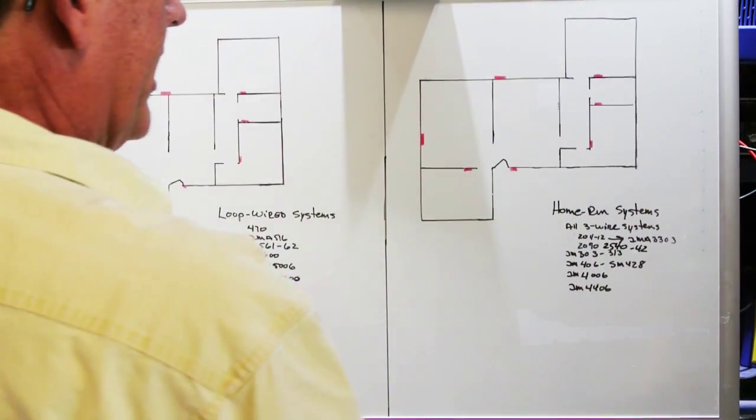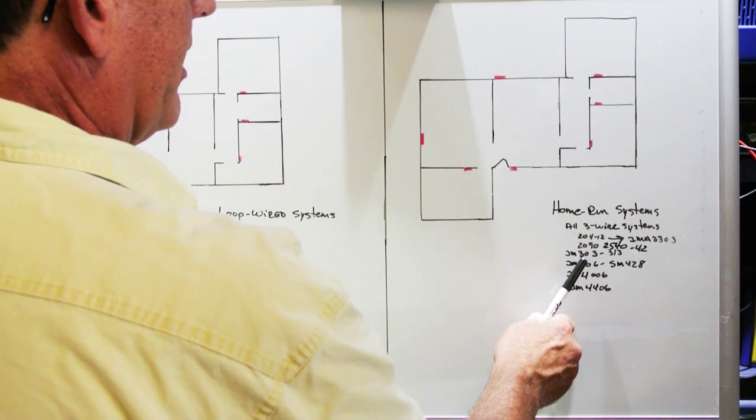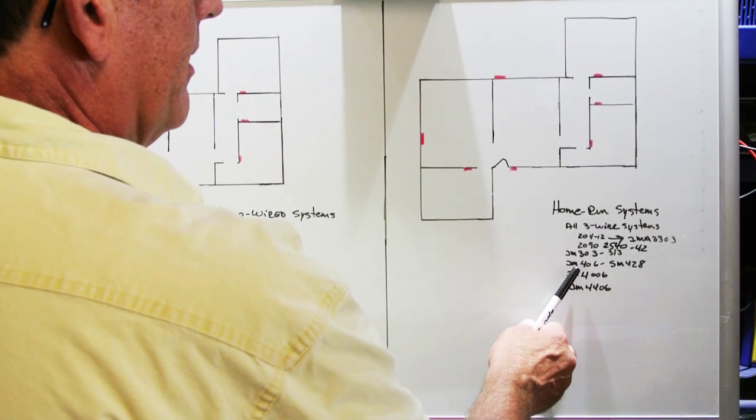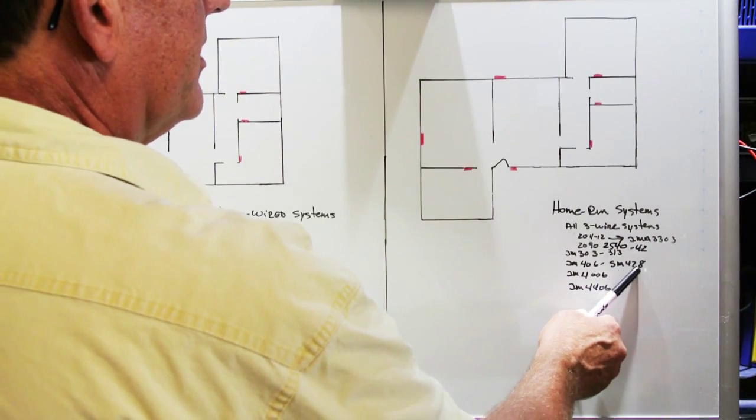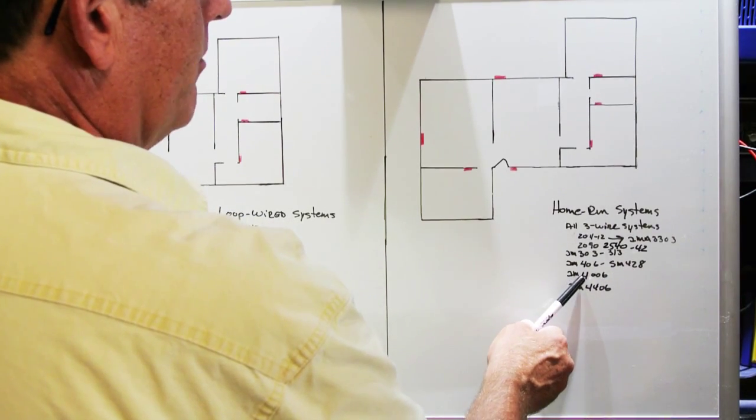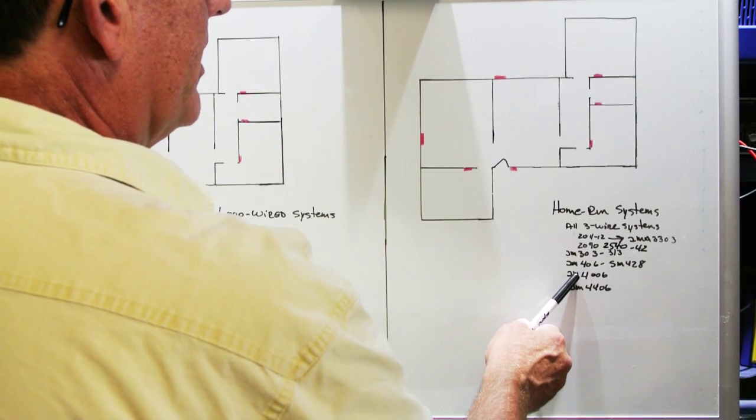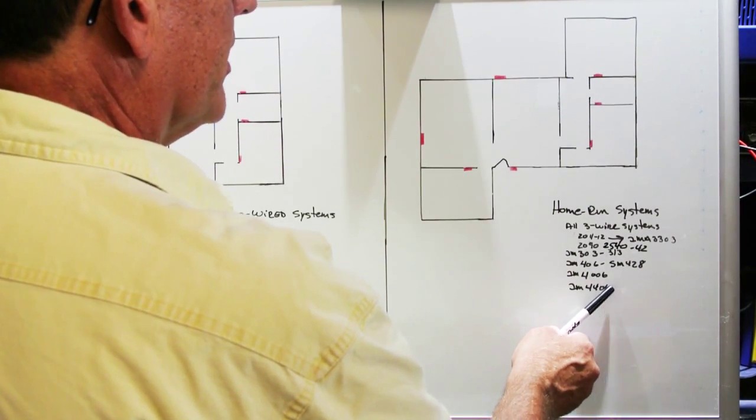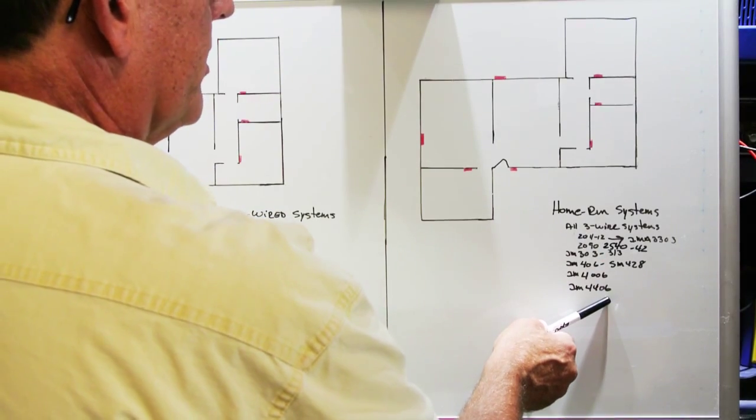And then you get into the IM series like 303, 313, there's IM203s, IM406s, SM428s, and then more modern systems like the IM and the IMA4006 and the IM and the IMA4406. These are all home run systems.